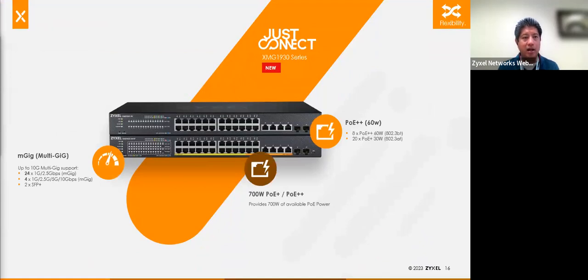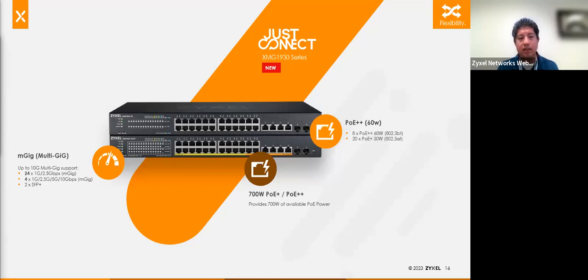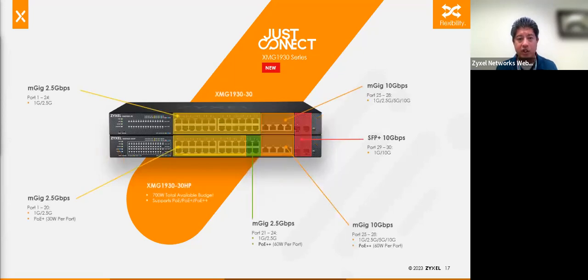The new XMG 1930 series that William mentioned was just launched recently. It is a multi-gig switch — some ports are gigabit and 2.5, four of them can be anywhere from 1 gig up to 10 gig, and there are two 10 gig SFP+ ports as well. There's a PoE version with 700 watts of PoE power. Eight ports do ultra PoE at 60 watts, and the other 20 ports do 30-watt standard. So it's a split — useful for devices needing higher PoE budget.